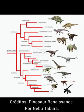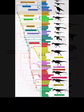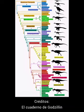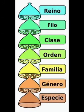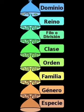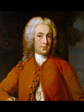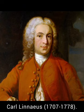De esa forma se van elaborando los cladogramas, que son, por decirlo así, los árboles familiares de las especies que nos indican sus probables relaciones de parentesco. Esto se registra en la tabla taxonómica, que va desde el reino, el filo, la clase, el superorden, el orden, el suborden, la familia, el género y la especie. En el tiempo del naturalista sueco Carl Linnaeus, el padre de la taxonomía, se clasificaba a las especies por sus rasgos parecidos sin asumir un parentesco, ya que Linnaeus era fijista.